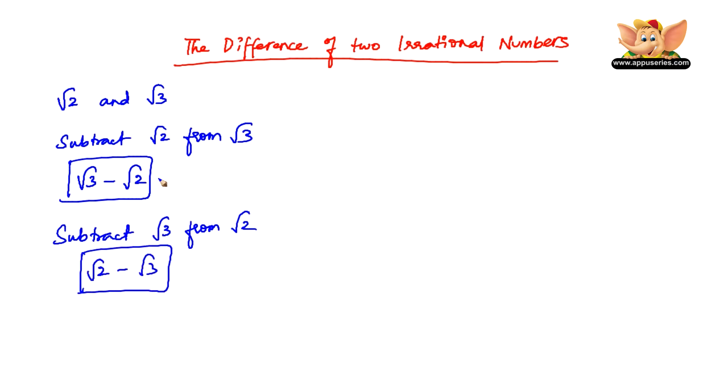Although we can see that these two are very much irrational numbers, let us find the difference of root 2 and root 2, which is nothing but root 2 minus root 2, which is 0. Now 0 is a rational number.